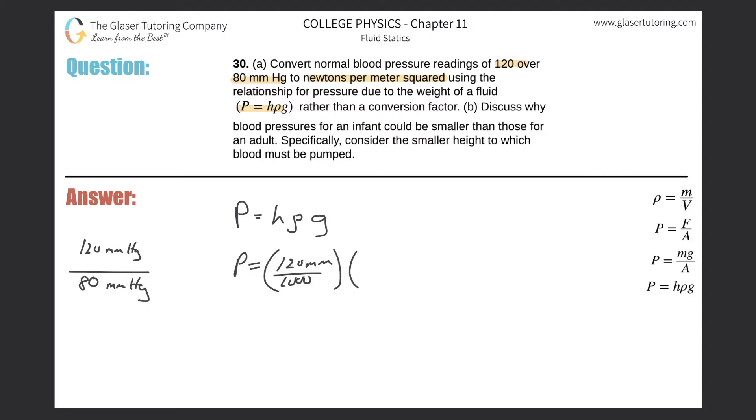So here's our height. The density of mercury, then you need to use because that's what we're discussing. The density of mercury here is going to be 13,600 kilograms per cubic meter. And the gravity is 9.8.